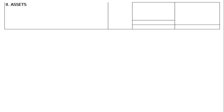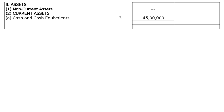Then the asset side: non-current assets is not there. Current assets — cash and cash equivalents, note number 3 — rupees 45 lakhs.